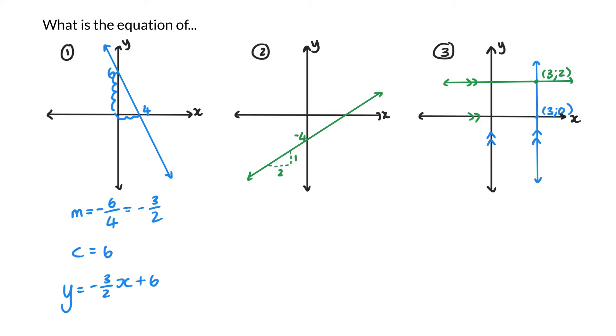In question number 2, I already know my y-intercept is 4, and my gradient, the change in y or the rise is 1, and my run or my change in x is 2. So my gradient is a half. That means my equation is y equals half x plus 4.